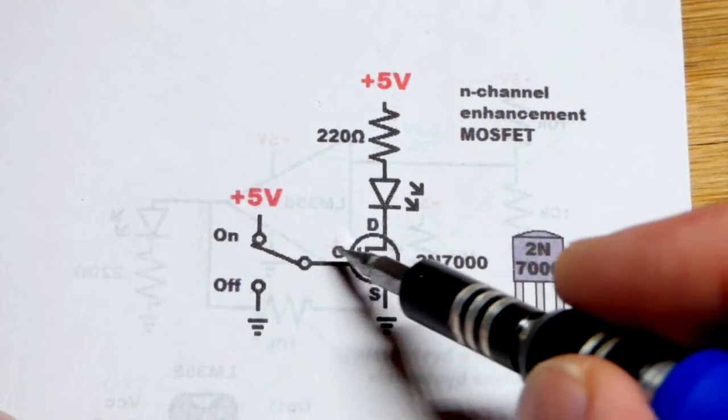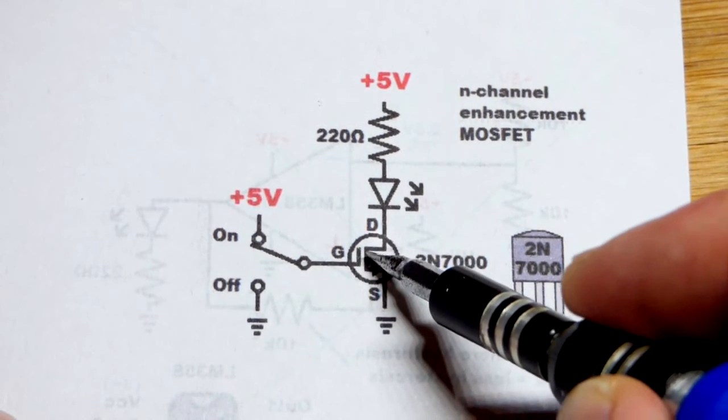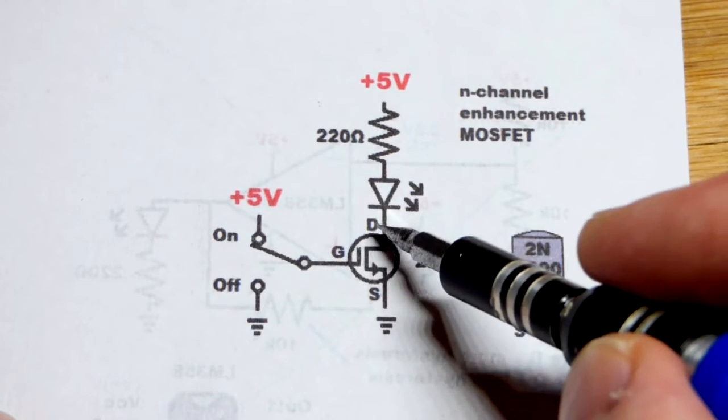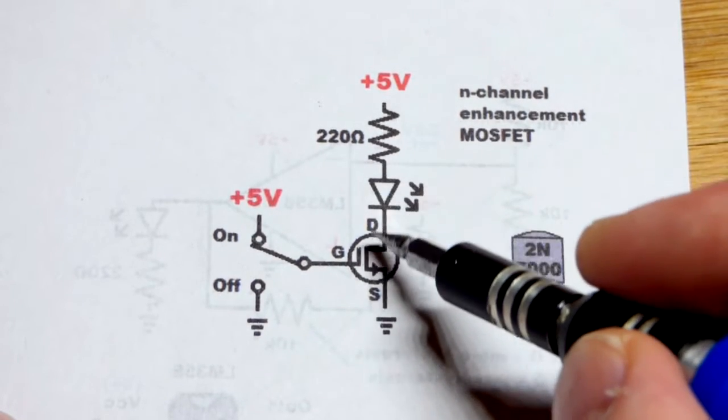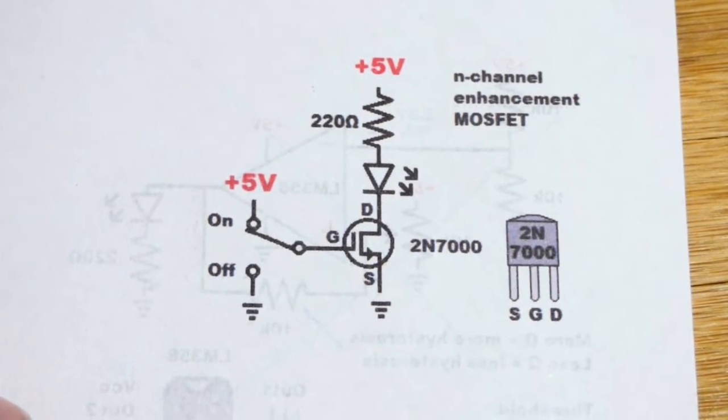If you go more negative to the gate, then the channel becomes positive. And then it does not conduct. It's off. And the LED resistor are in series, so they'll stop conducting. The LED will be off. Pretty straightforward.